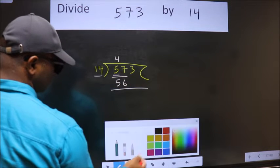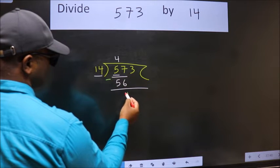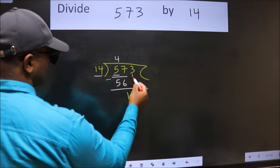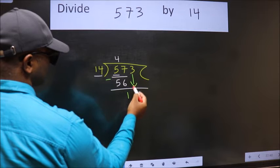Now we should subtract. We get 1. After this, bring down the beside number, so 3 down.